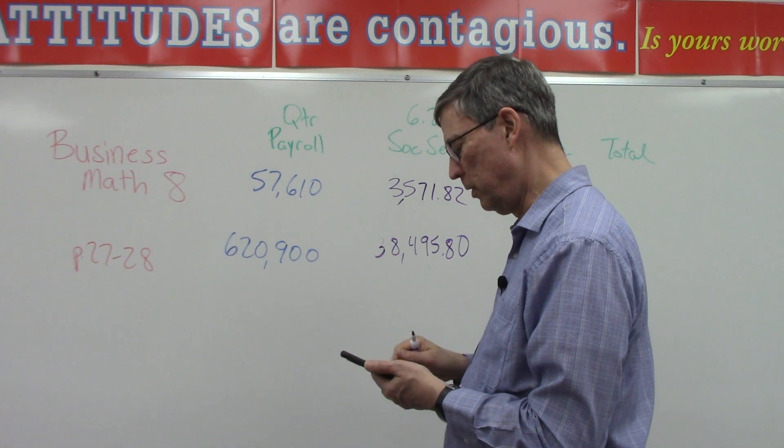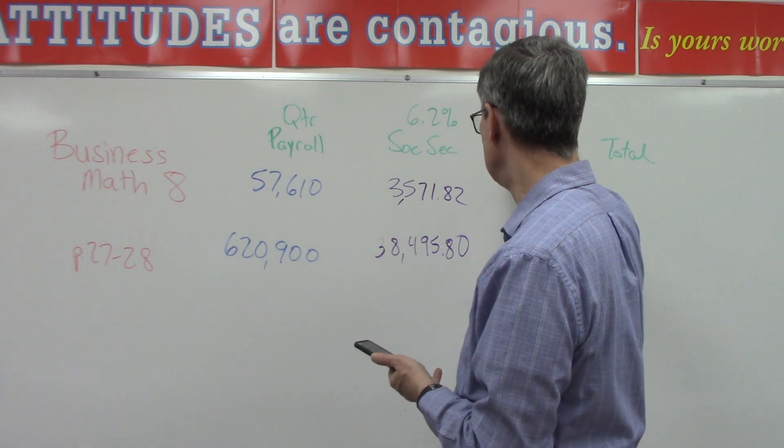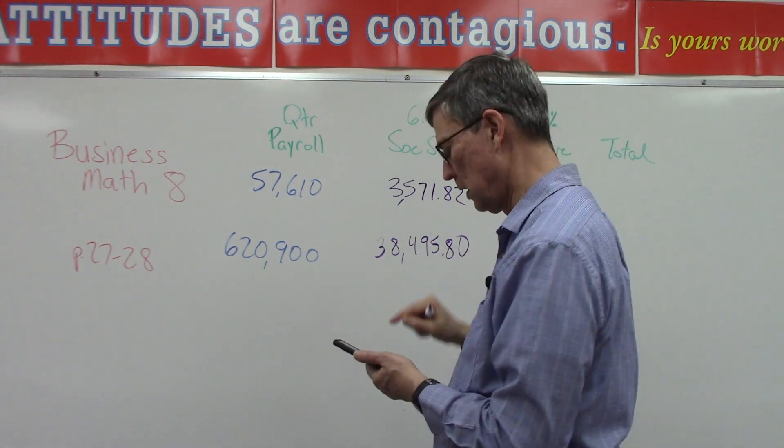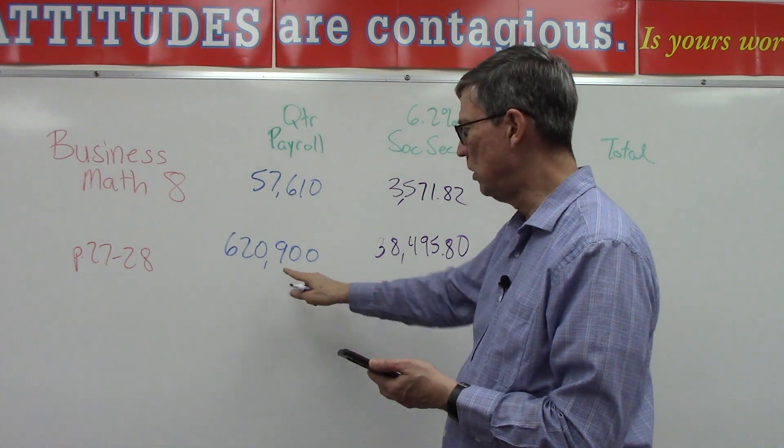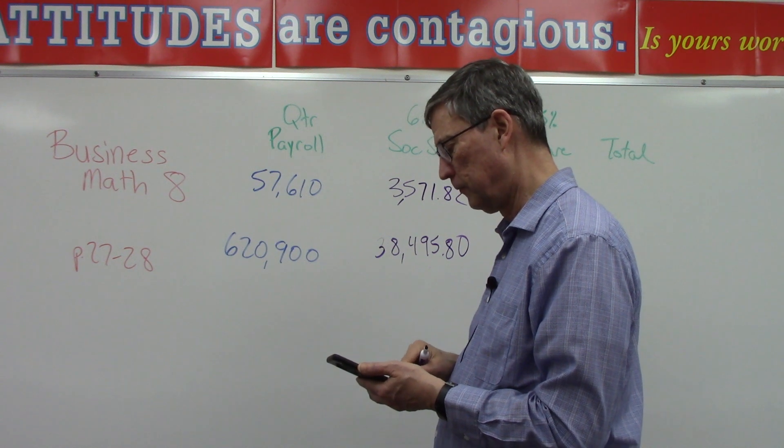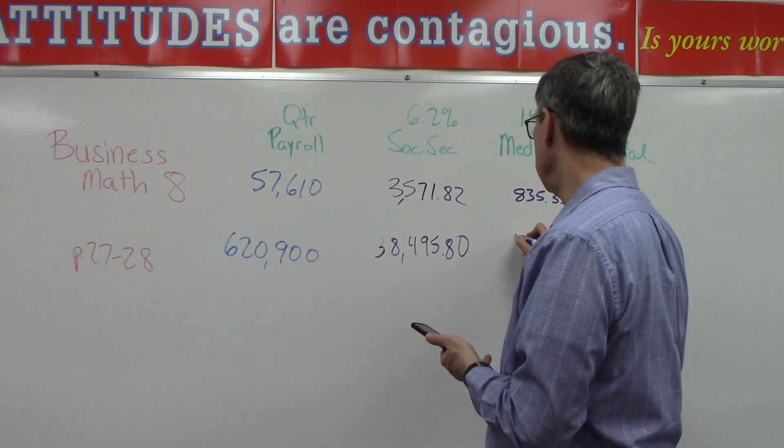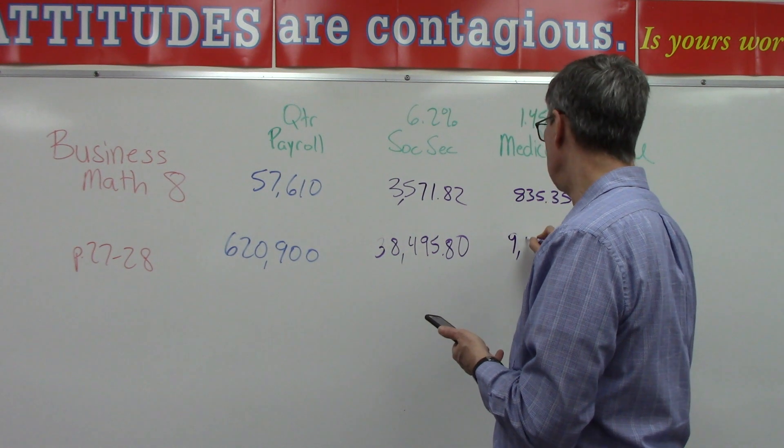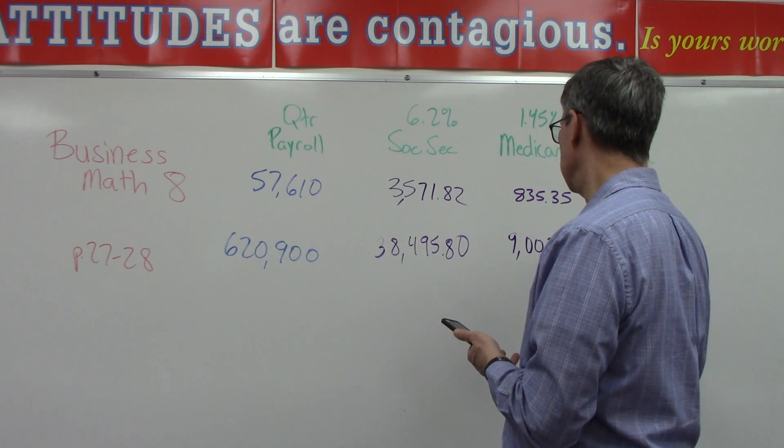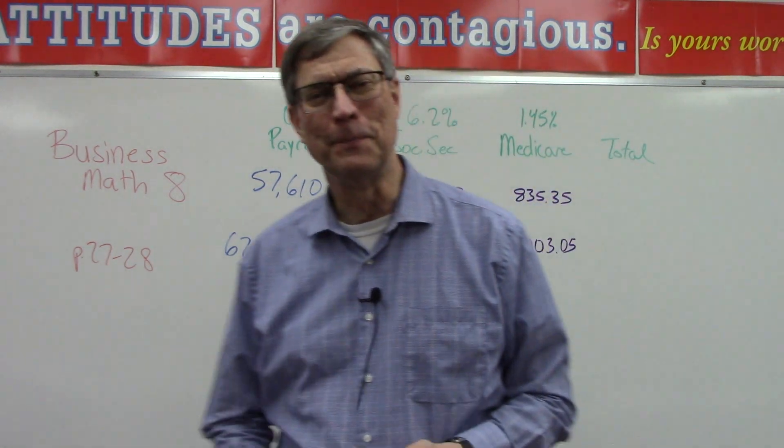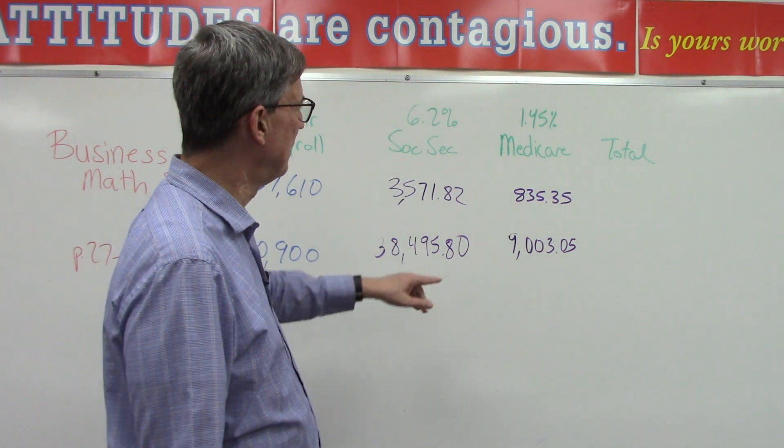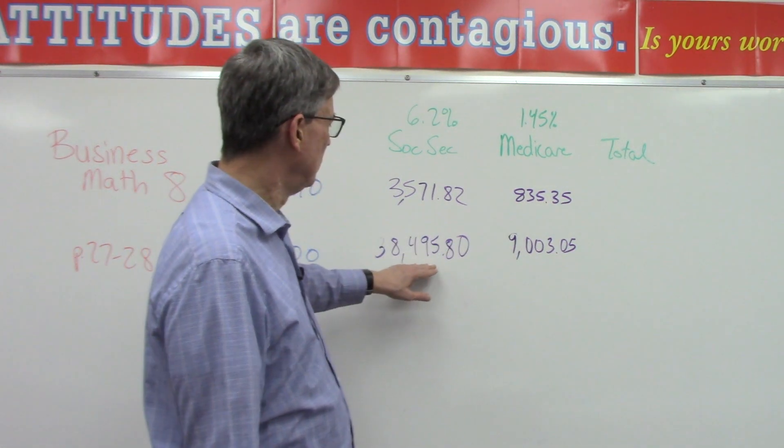And then we're gonna take this decimal, 0.0145, times our payroll for the quarter, this big number here—$9,003.05. All right.